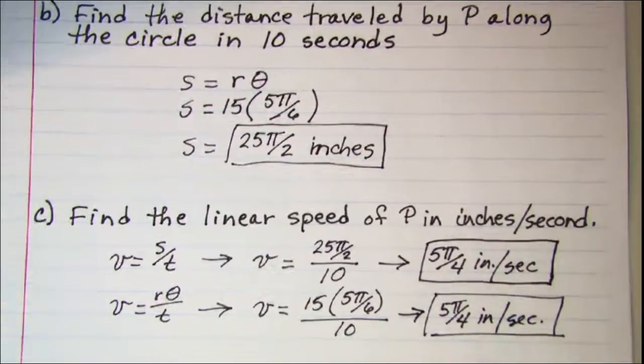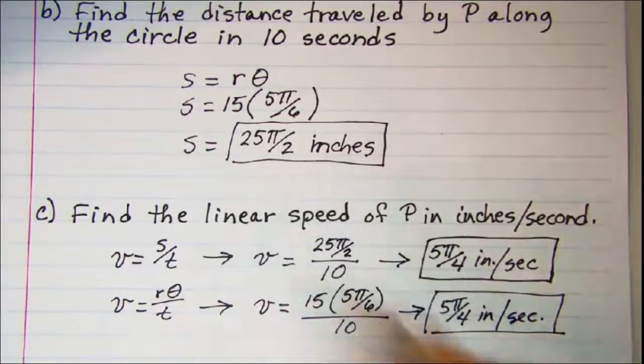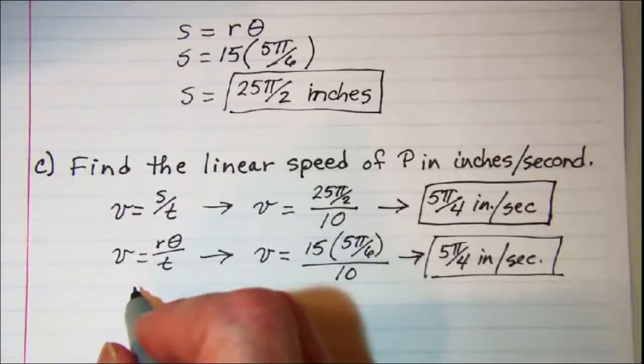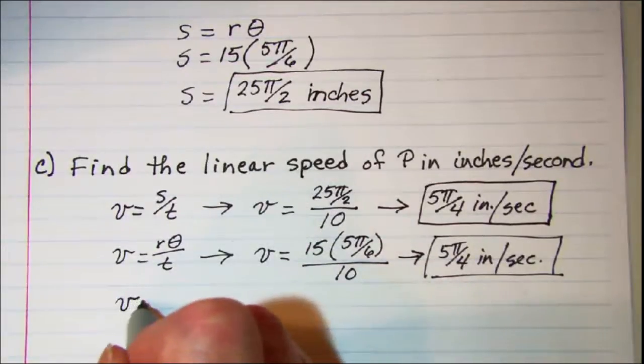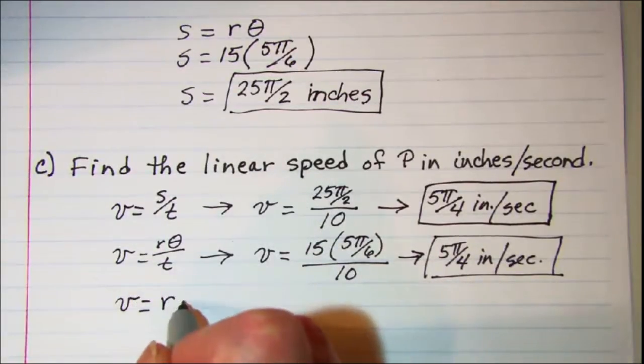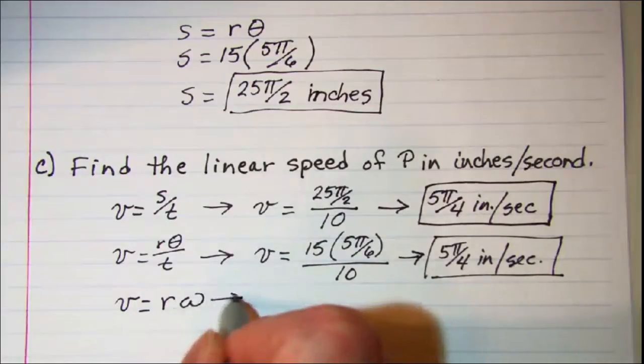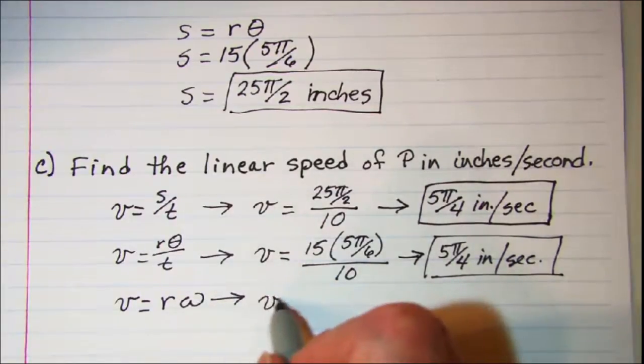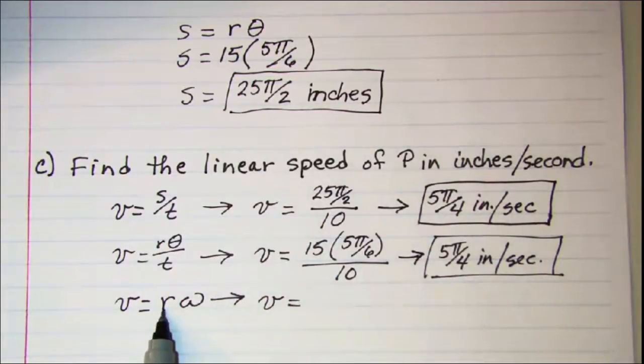And then if we use our third formula which is v equals rω, we get v is equal to and r radius is 15.